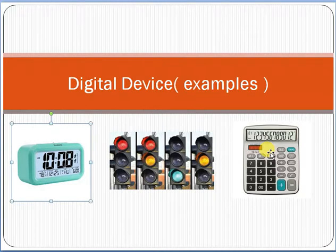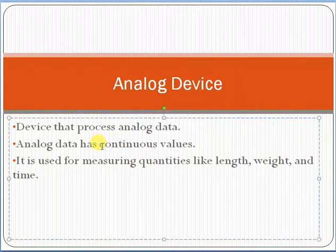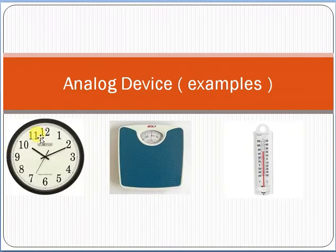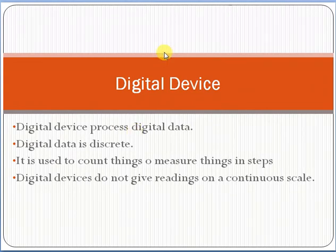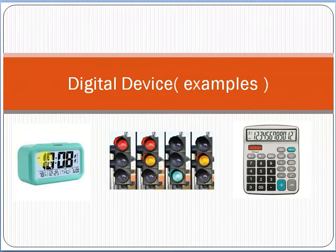To clarify, the main difference between analog and digital: analog data has continuous values — for example, a clock, weighing machine, or thermometer are analog devices. A digital device processes discrete data, meaning it counts things step by step. Simple examples of digital devices are a digital clock, calculator, or traffic light, which count in discrete steps.